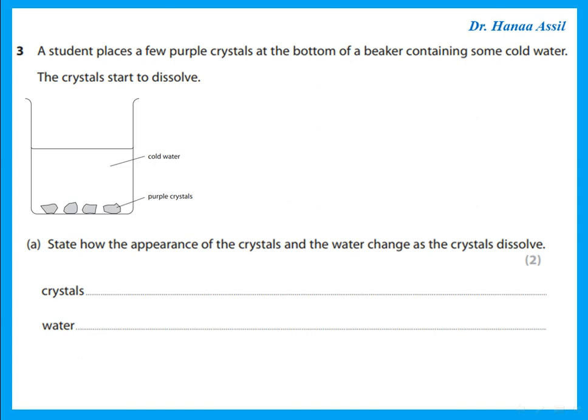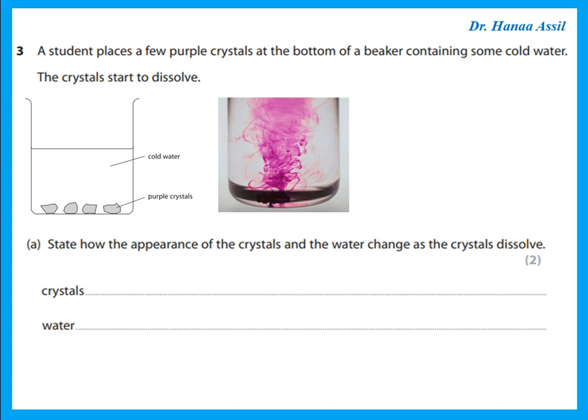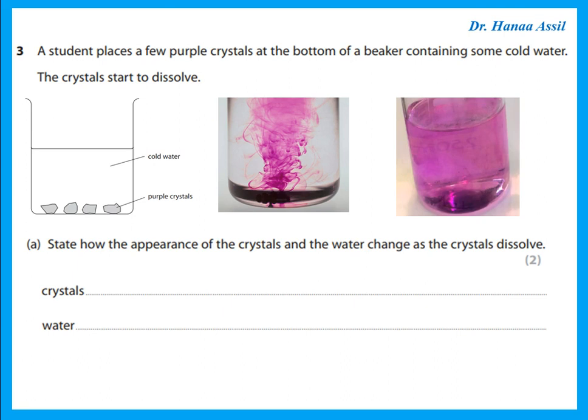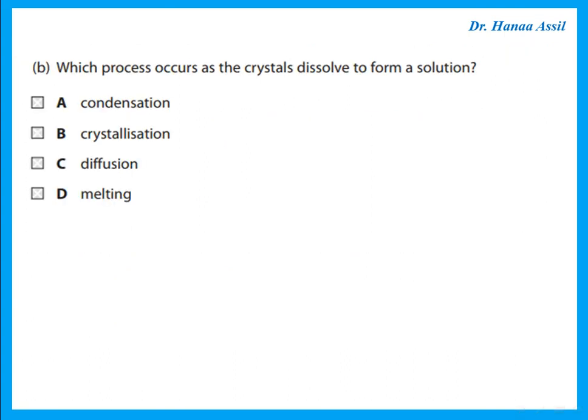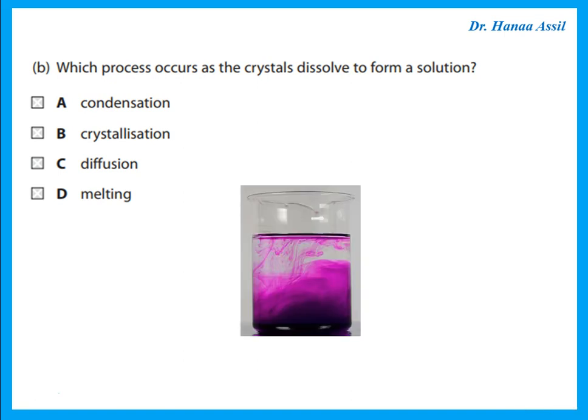A student places a few purple crystals at the bottom of a beaker containing some cold water. The crystals start to dissolve. State how the appearance of the crystals and the water change as the crystals dissolve. The crystals will start to dissolve until all the water becomes purple in colour. The crystals become smaller or they disappear, and all the water turns purple. The process occurring as the crystals dissolve to form a solution is diffusion — movement of particles from an area of high concentration to an area of low concentration down the concentration gradient.